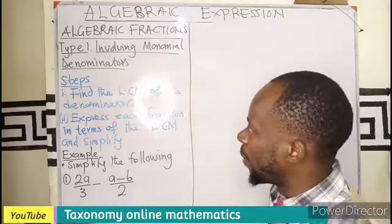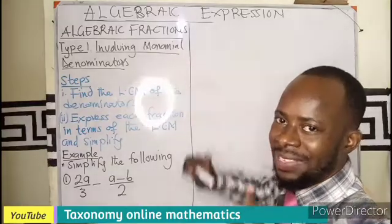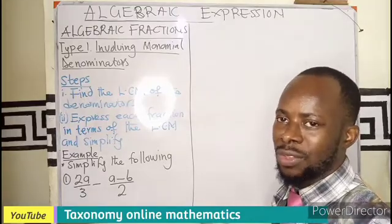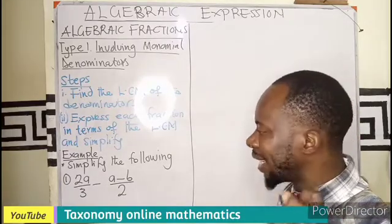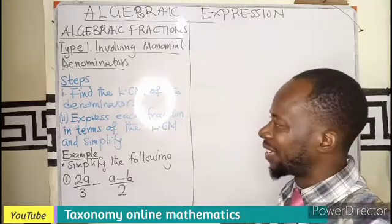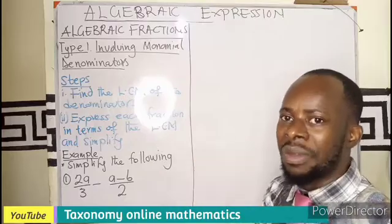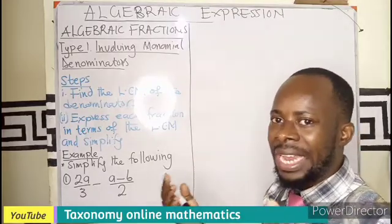Algebraic expressions involving fractions. There is a first type where we have the denominator being a monomial, meaning a single term, not binomial meaning it is not two terms, but just a single term. So in doing so, what we do is that if we are to simplify two terms that are algebraic fractions, differed by either plus or minus,